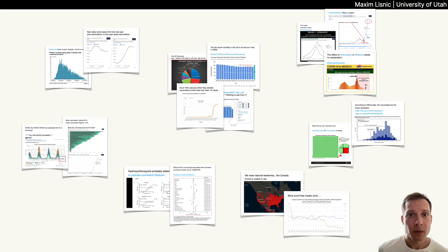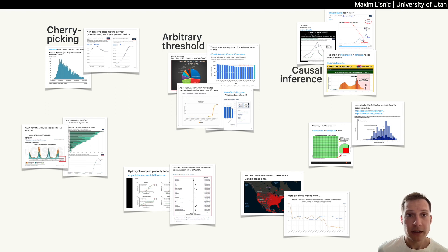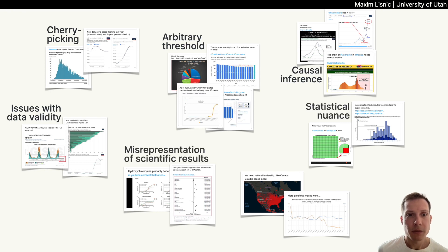We identified seven common types of errors: cherry picking, setting an arbitrary threshold, incorrect causal inference, issues with data validity, failure to account for statistical nuance, misrepresentation of scientific results, and incorrect reading of a chart.